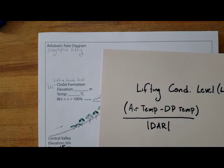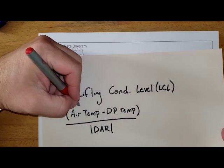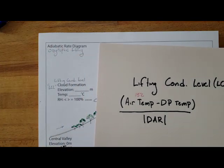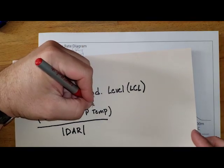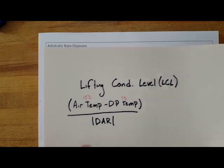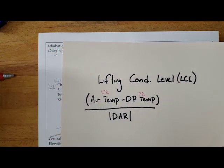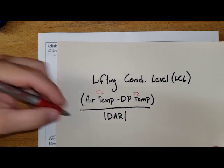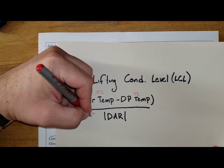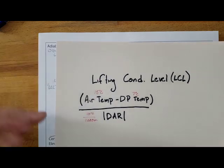Well, my air temperature is 15 degrees Celsius. My dew point temperature is 7 degrees Celsius. And the dry adiabatic rate, well, it goes up and it goes down. But this is asking for the absolute value. So it's going to be 10 degrees Celsius over 1,000 meters.